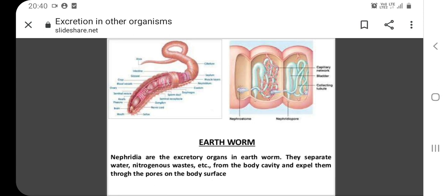The cilia propel waste matter down the tubule and out of the body through excretory pores. Flame cells are found in flatworms.